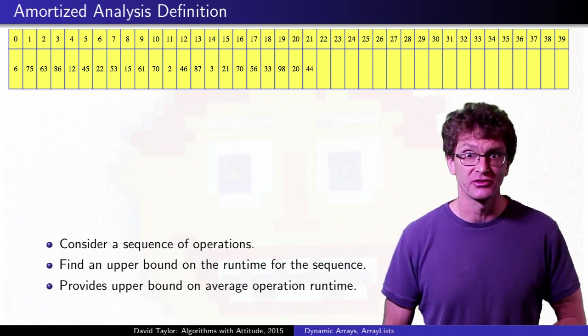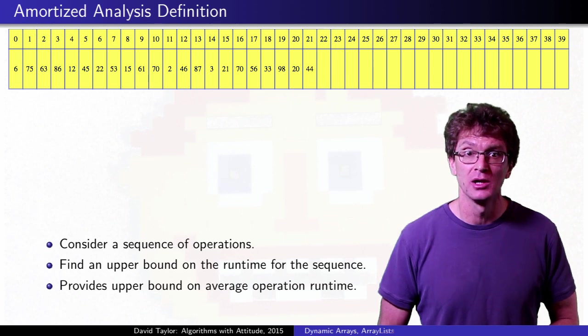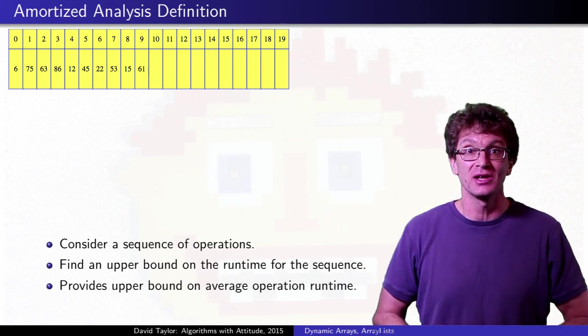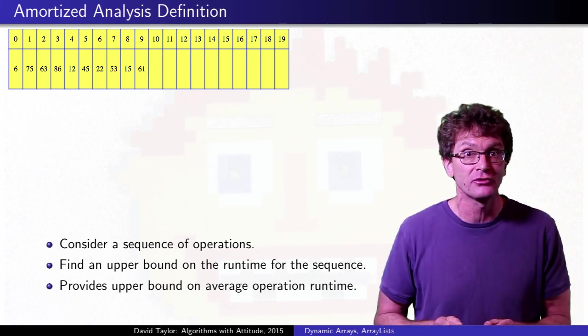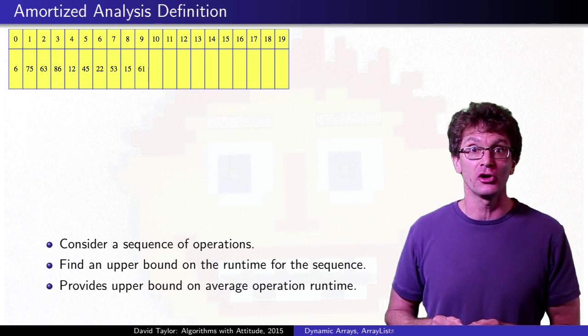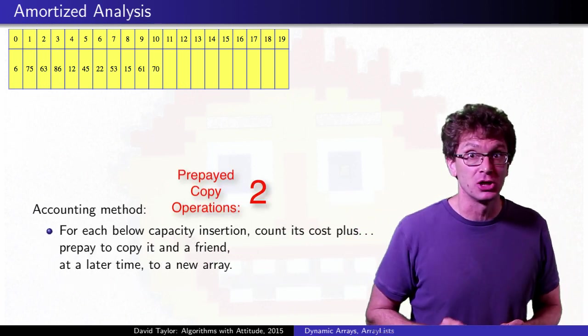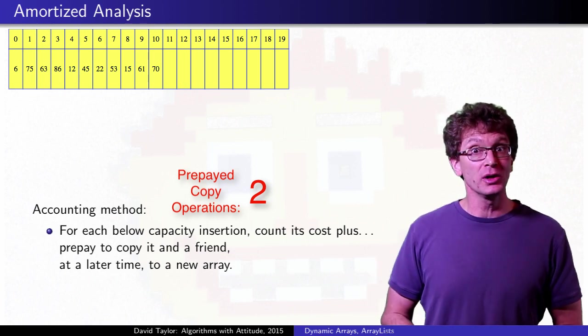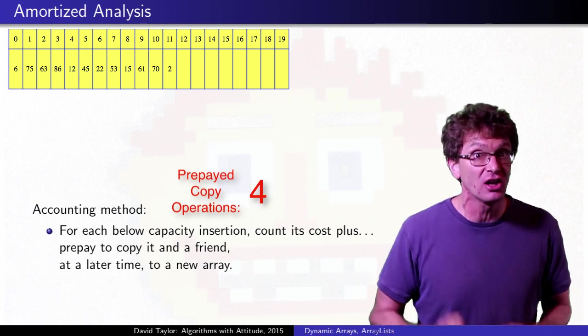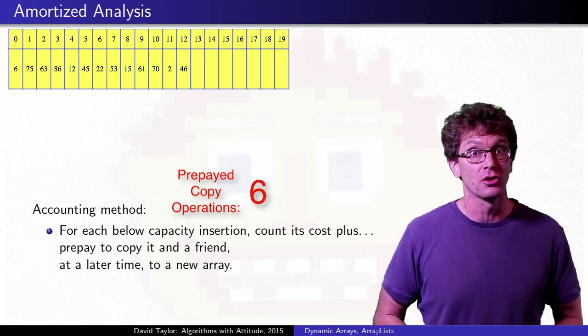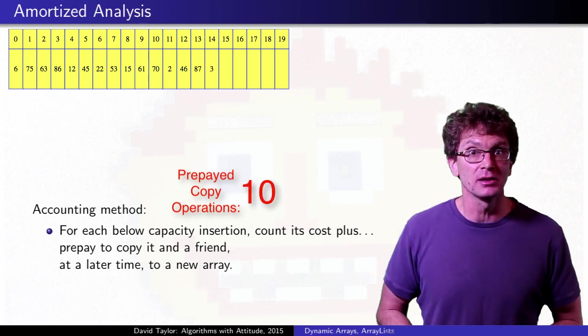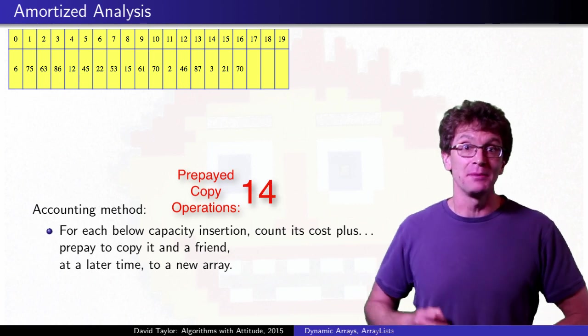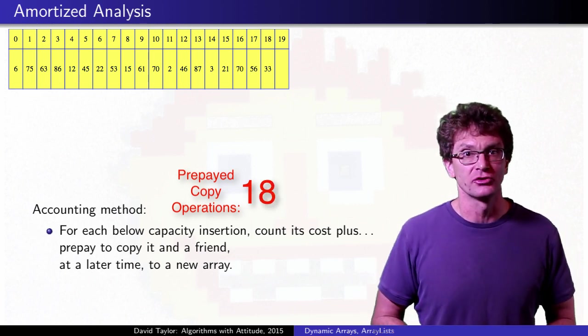How do we prove that insertion takes on average constant time per operation? Imagination and incidence. No, going back to our half full array of capacity 20, imagine that every time we insert into the array, if we have space, we not only pay for insertion, but also prepay to copy two values to new locations sometime in the future. Including this extra imagined payment, insertion still takes constant time, even if it is a few times larger than the real time insertion takes. Clearly, adding that extra time to my time analysis isn't going to let me under count how much real time is used to insert items.